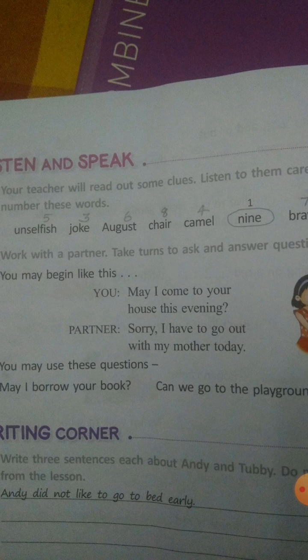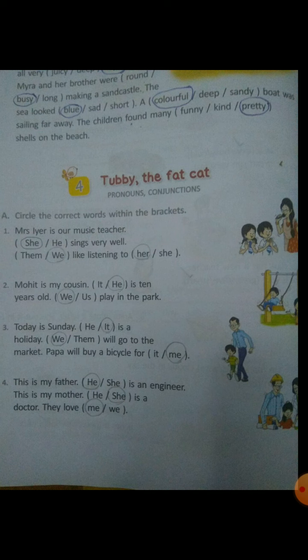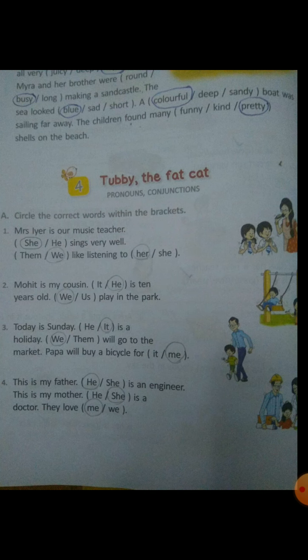Now we can move to the grammar section, page 54 — Tubby the Fat Cat. Here, you have to use pronouns as well as conjunctions. We know that pronouns are words that are used instead of a noun: he, she, it, they, them — all are pronouns. Now, what are conjunctions? Conjunctions are words that connect or combine two sentences. For example, and, so, because, but — all are conjunctions.